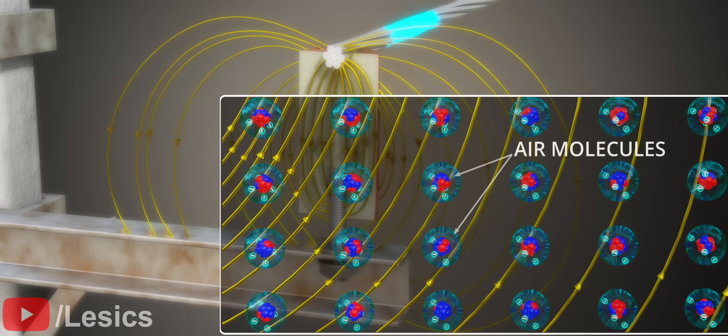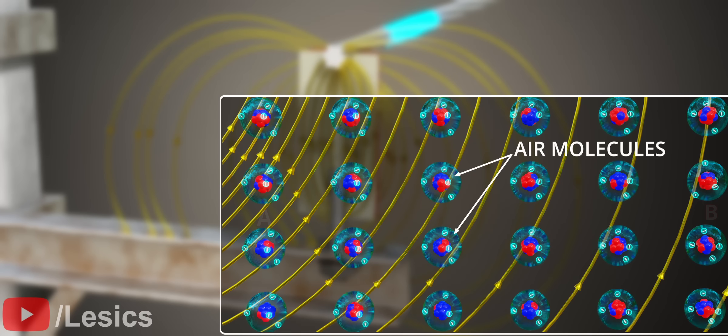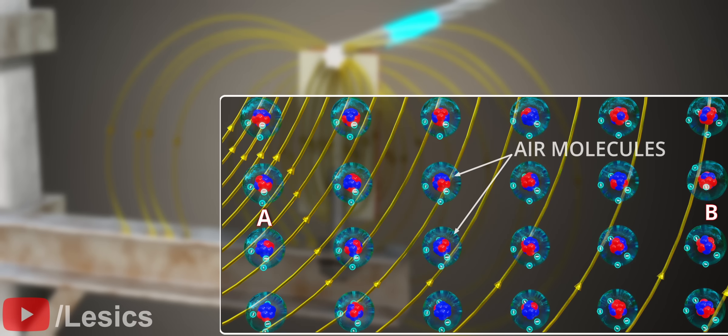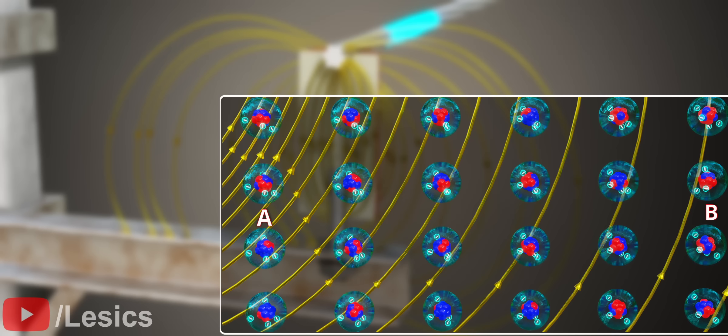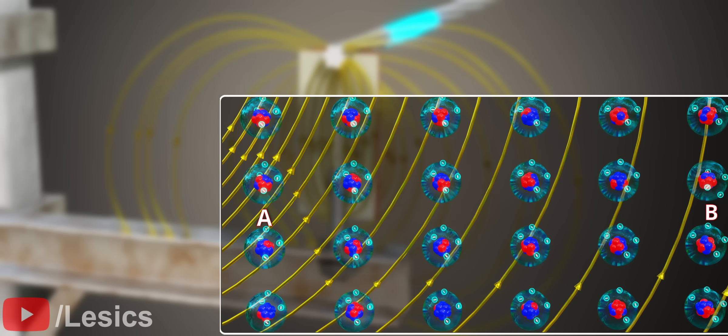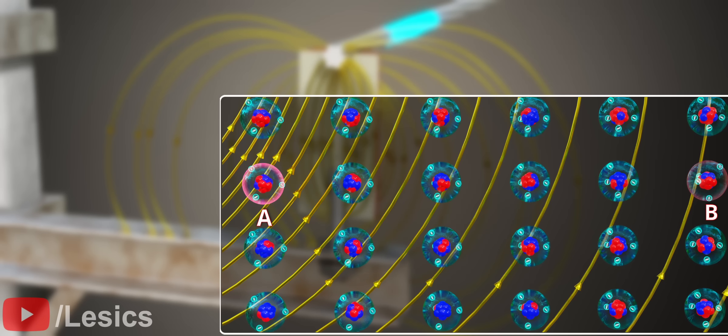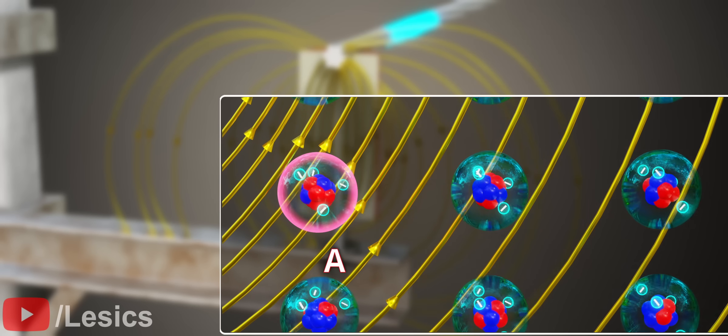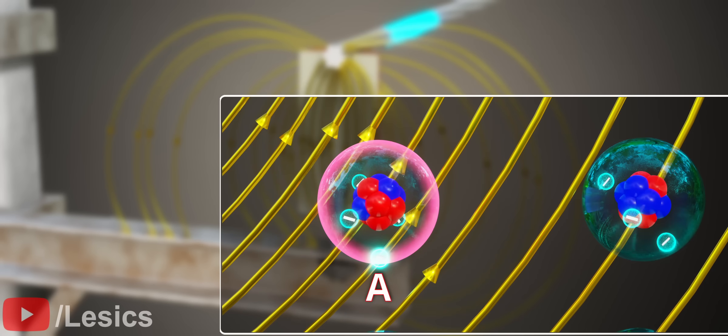Let's consider this example of air volume. Consider two points, A and B. The intensity of the electric field lines at both points is the same, but more field lines pass through point A. This means atom A is experiencing more force and becoming more stressed than B. That means A is more likely to leave its electron first and initiate the flashover process.